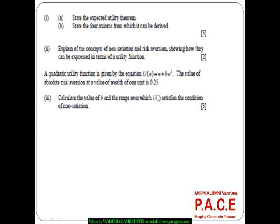Now a quadratic utility function is given by U of W equal to W plus BW squared. Now just quickly, we will see what is U dash of W, which is 1 plus 2BW and U double dash of W is 2B.